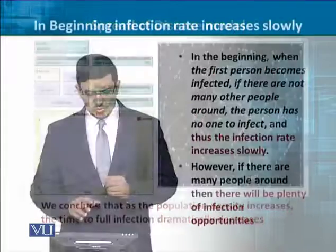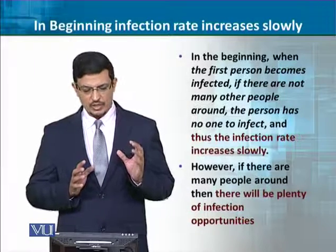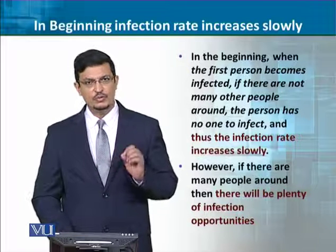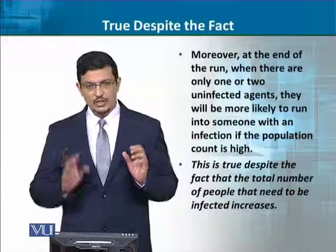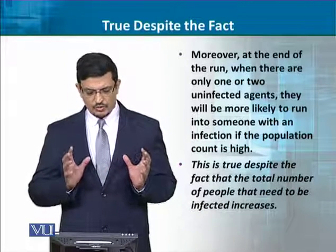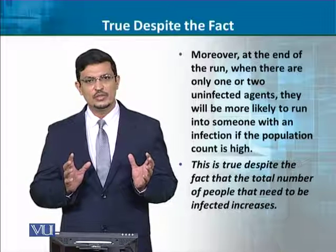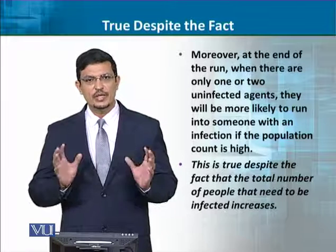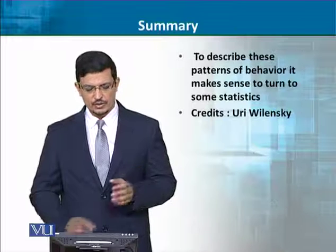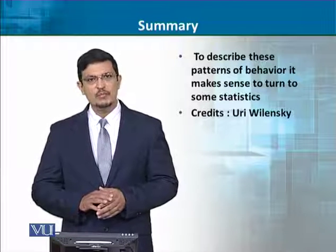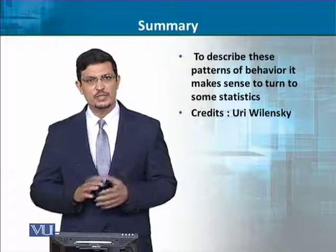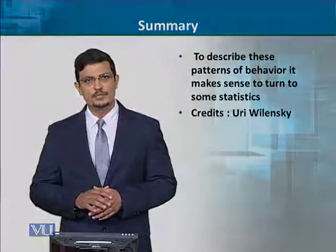Initially jab aapki infection hoti hain, woh slow rise karti hain, lekin agar log zyada qareeb hoon to unko infection ki possibility zyada hoti hain. Now this is true despite the fact ke total number of people kitne bhi hoon jo infected ho sakte hain. Yahan hum ne yeh nahi consider karna ke real world mein kya hoga, balki humari simulation aise honi chahiye jo real world ko match kar sake. So we've seen ke hum apne model ko is tarah se design kar sakte hain jiske andar networks ko use karke infection ke spread ko model kar sakte hain.